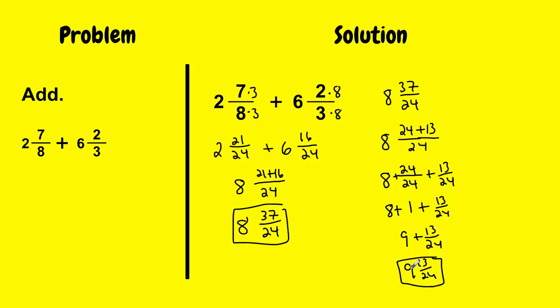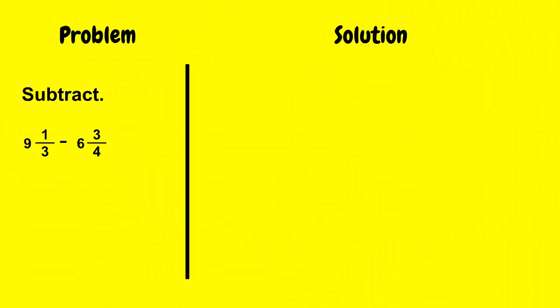And then I'm finished. Because this is an integer and this is a proper fraction, therefore it's a mixed number. Let's look at another problem. Here it says to subtract 9 and 1 3rd minus 6 and 3 quarters.